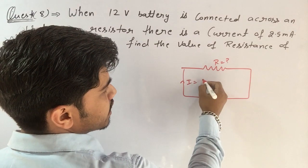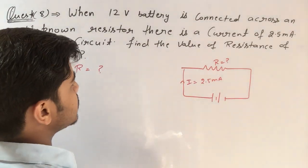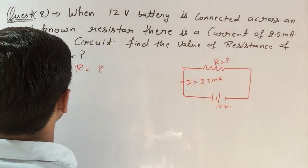Current into the circuit is 2.5 milliamperes. This is our circuit current according to our question, and battery is of magnitude 12 volts.